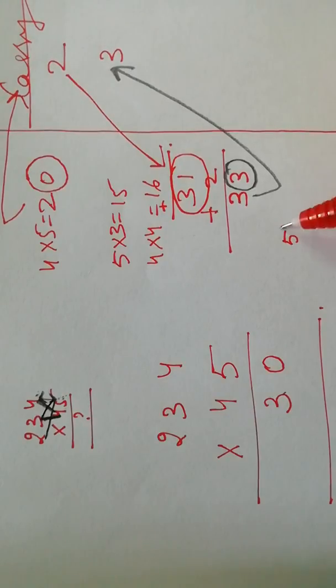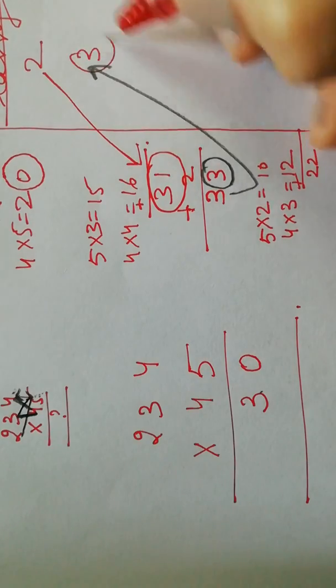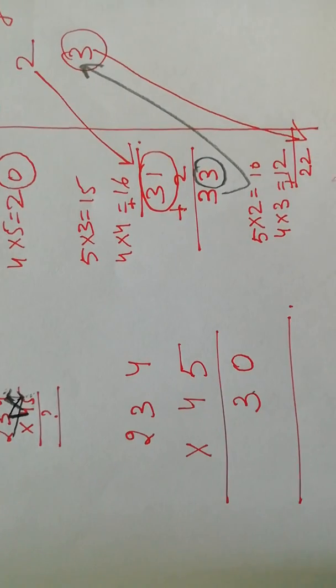We're multiplying 5 and 2, we'll get 10. And I'm multiplying 4 and 3, I'll get 12. Now I'll add, as I added here, so I'll add and I'll get 22.